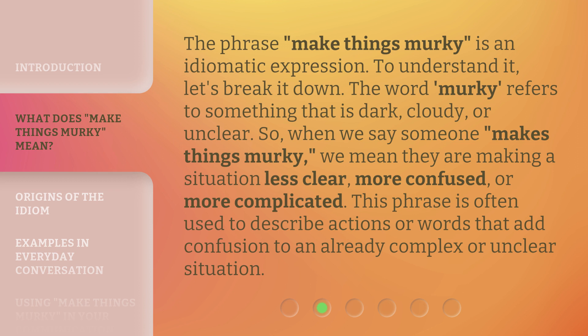The phrase 'make things murky' is an idiomatic expression. To understand it, let's break it down. The word 'murky' refers to something that is dark, cloudy, or unclear. So when we say someone makes things murky, we mean they are making a situation less clear, more confused, or more complicated. This phrase is often used to describe actions or words that add confusion to an already complex or unclear situation.